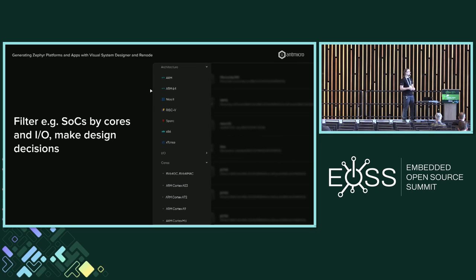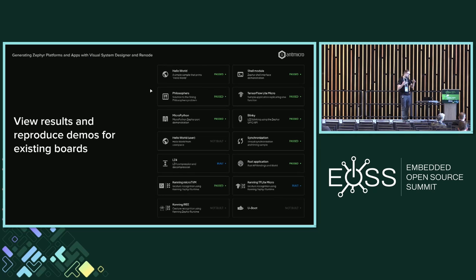One of the things we want to enable is: when you're making choices about what SOC to use, you can filter by cores, I/O, and just make your design decisions this way. And like before in Renodepedia, you can have those demos — we have a CI that builds demos for all boards we have Zephyr running on. You can look at the results, you can reproduce them fully — this is all open data. Both Zephyr and U-Boot are there now. You can grab the relevant binaries, look at the UART logs, look at the trace outputs. It's a great starting point — if you took a dev board, you could basically grab a binary from here and just run it, and it should work.